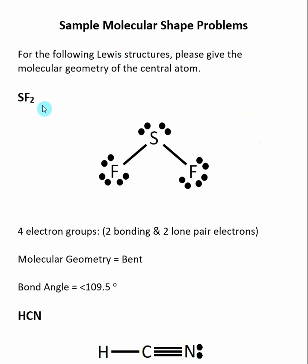Here the first example is SF2. We draw the Lewis structure first. Once you have the Lewis structure, the geometry is going to be based off of the central atom, and beyond that it's about counting electron groups.